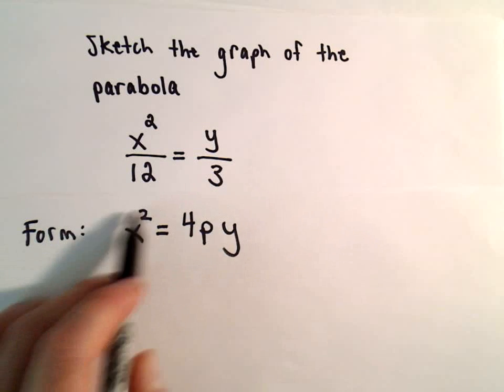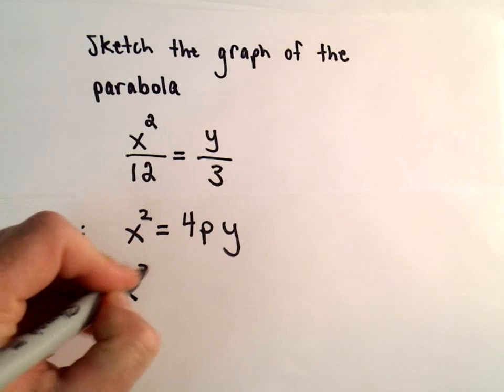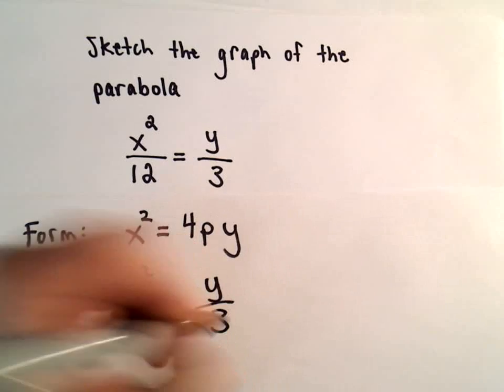What this says to me is, take your equation and get the x squared by itself. We have x squared over 12 equals y over 3.